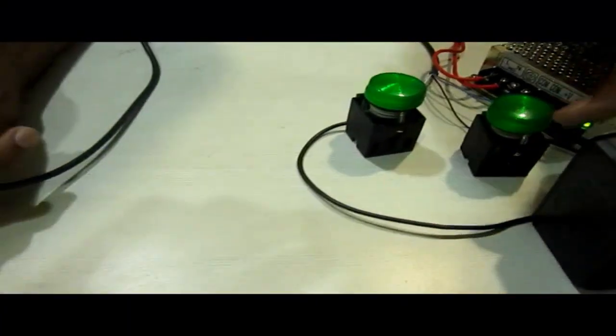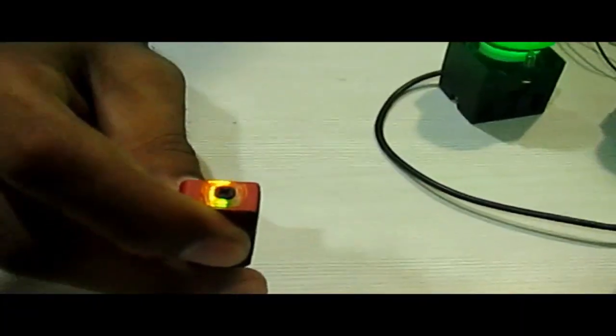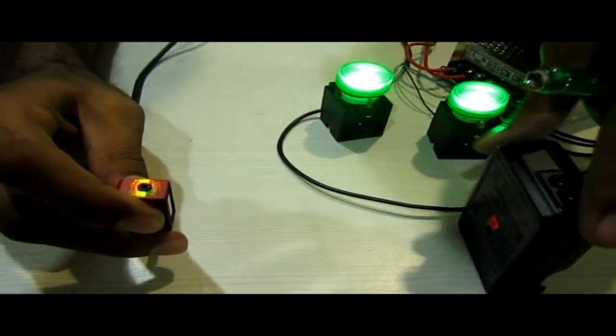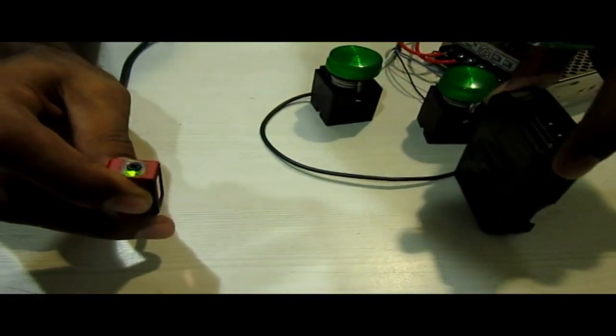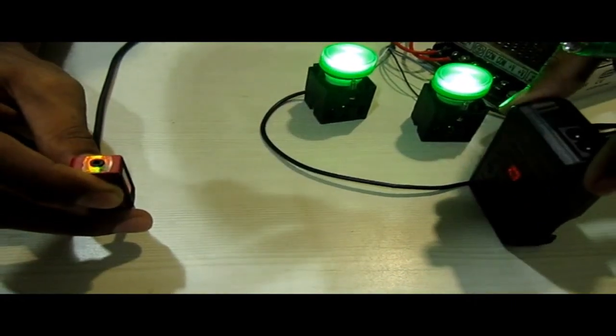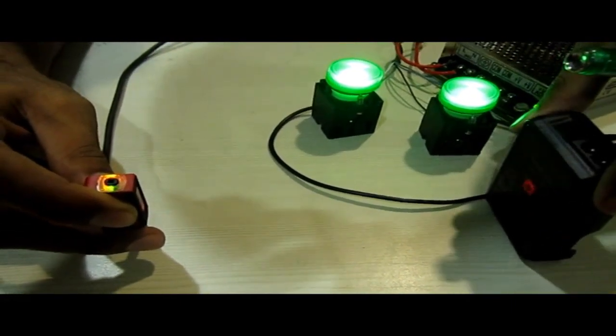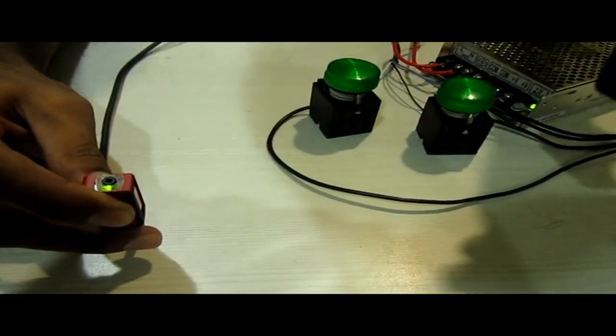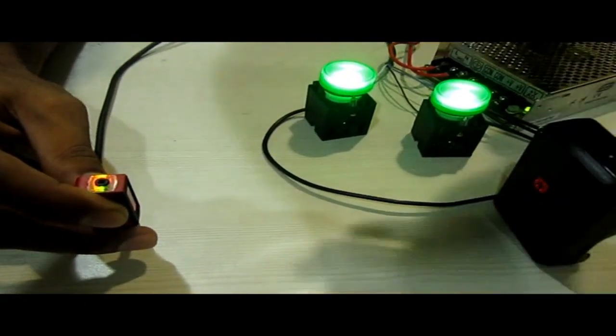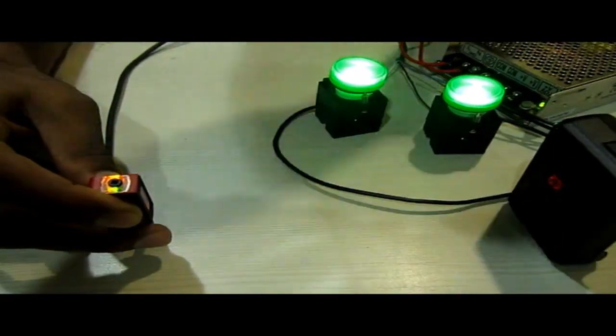Now what happens when object comes in the sensor range, these two indicators are on. So this is how we can use the indicators to indicate the presence and absence of object. When object is present the indicators are on and when the object is not present these are off. That's how we can use the photoelectric sensor to detect the object.